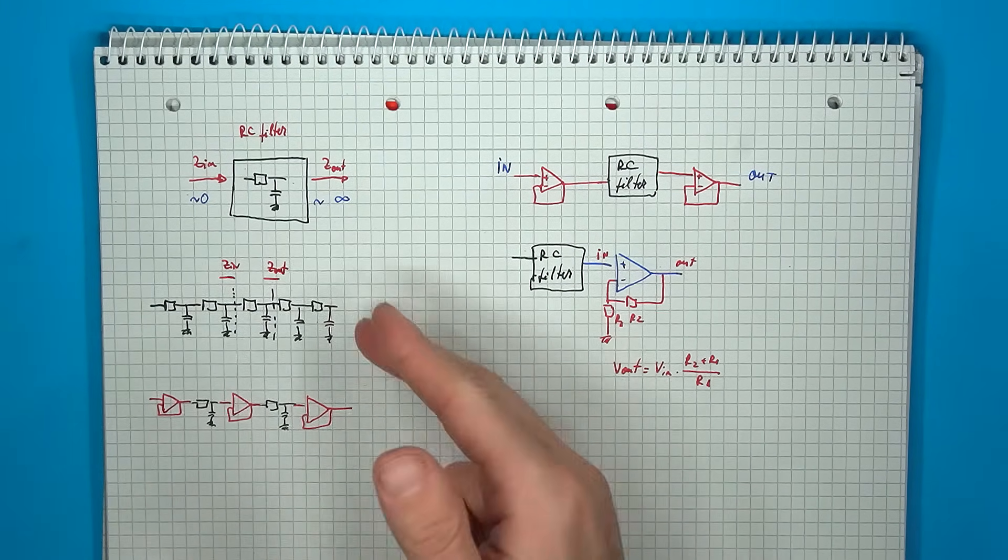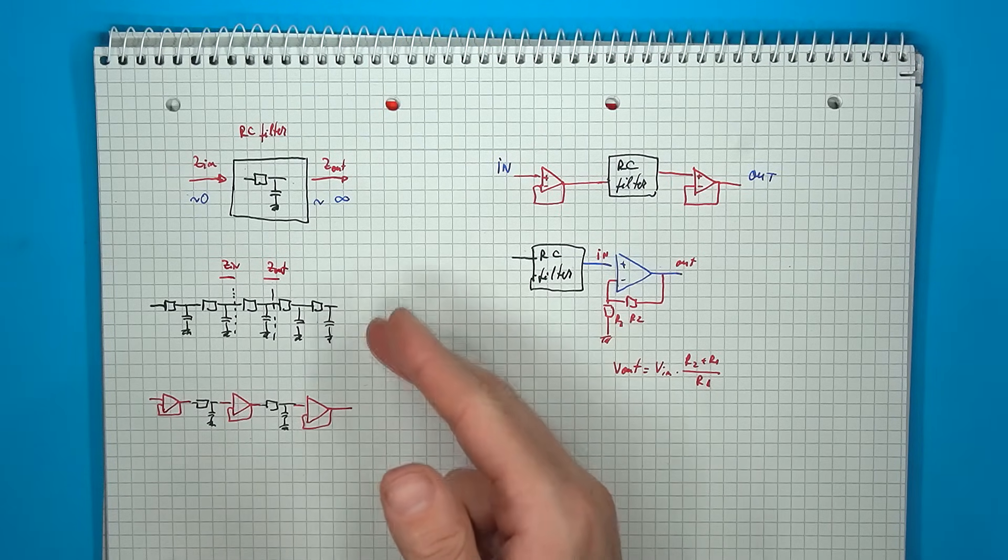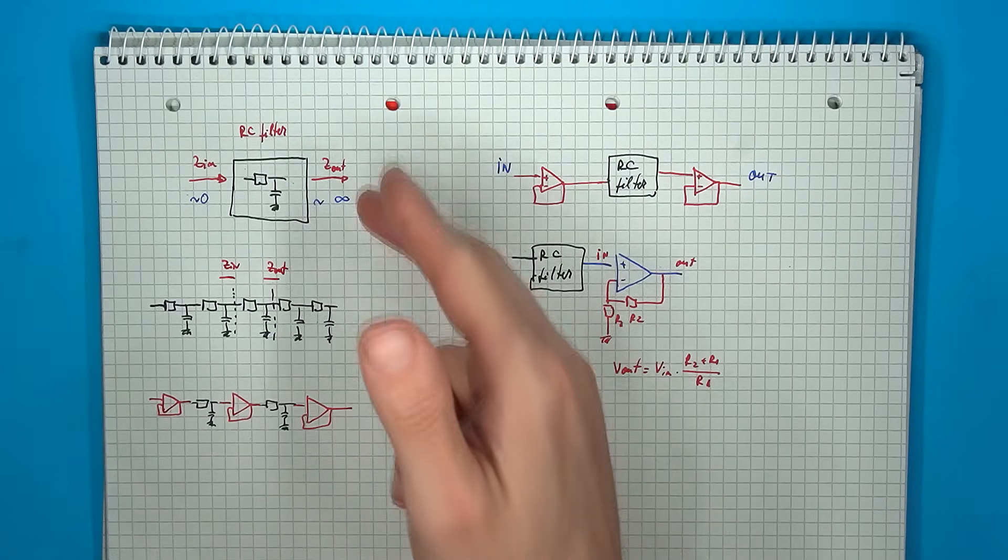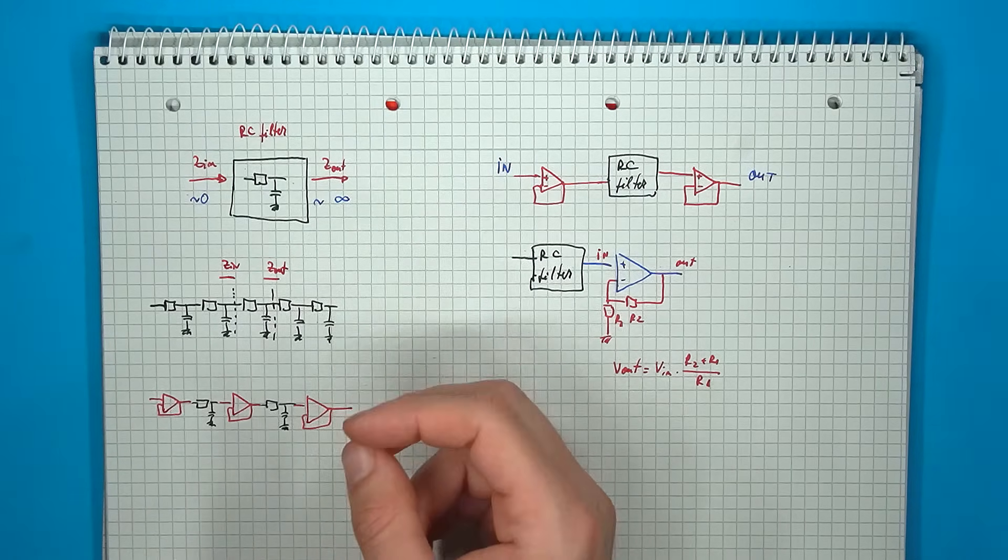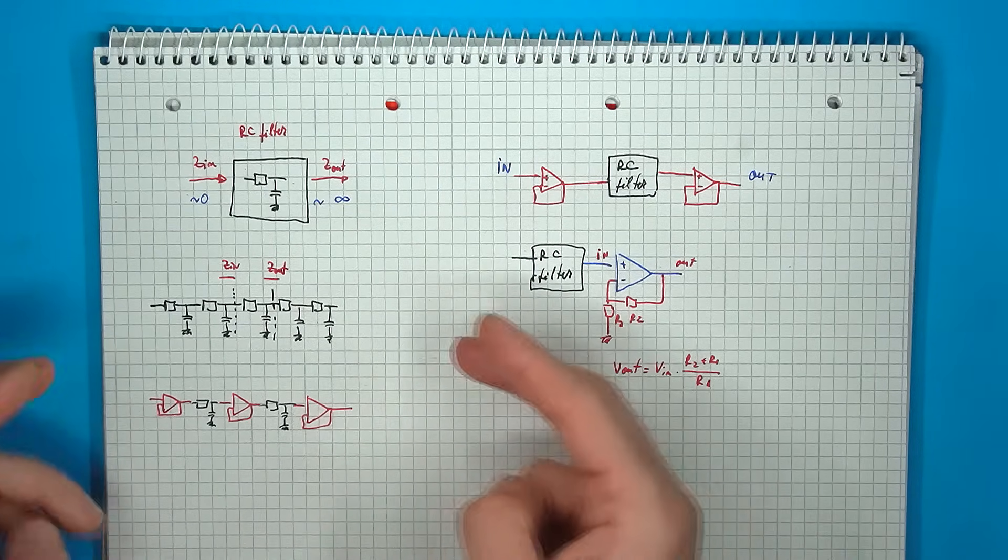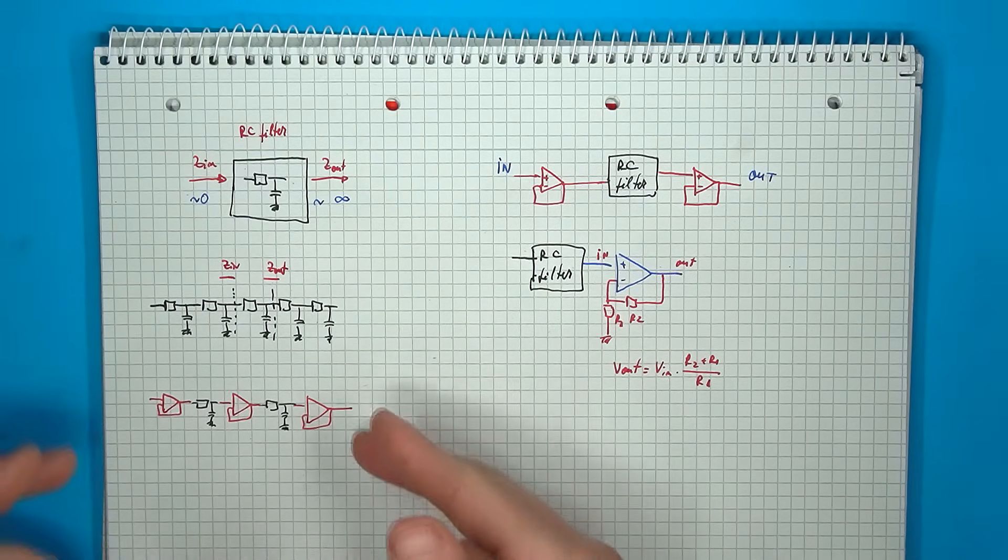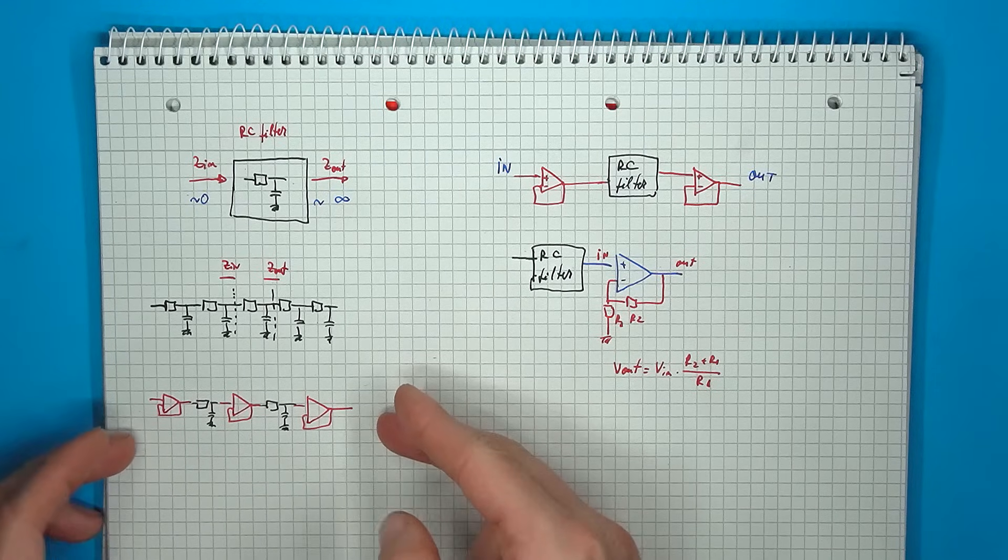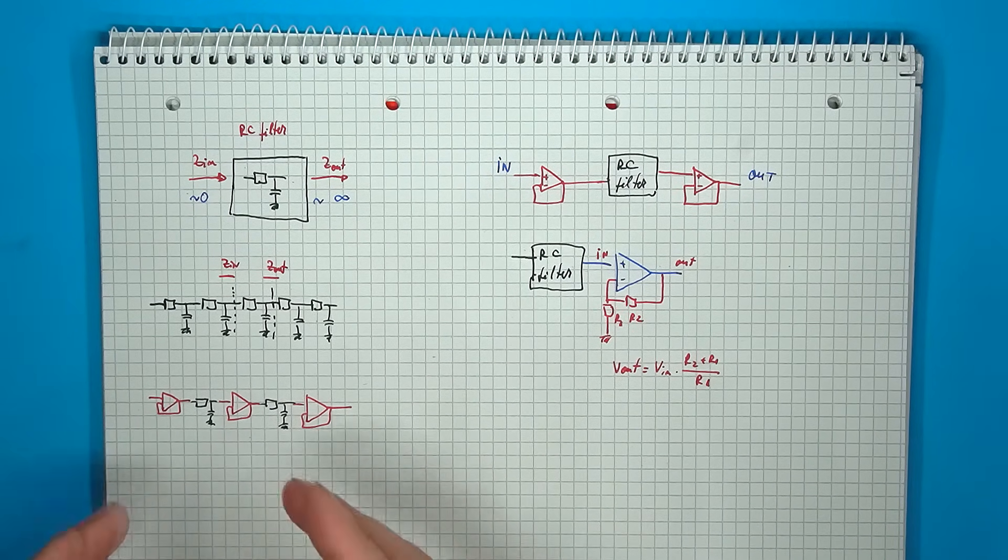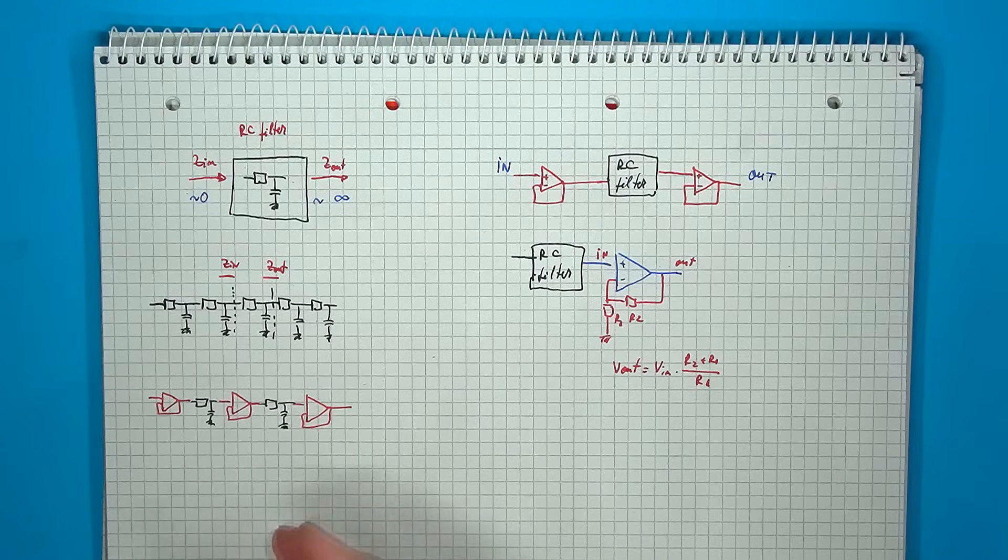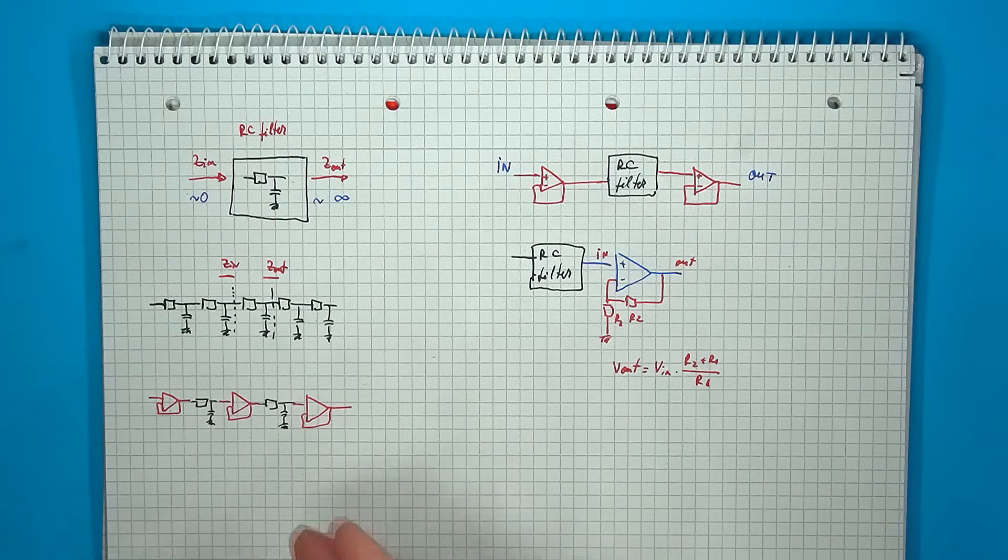If you connect multiple RC stages one after the other, the stages will not be operating in the ideal zero input infinite output impedance region, since the impedances will be defined by the interconnecting stages. By using op-amp isolators, you are getting much closer to the ideal behavior, since all of the stages are isolated from one another, and thus the performance of the filter will improve.